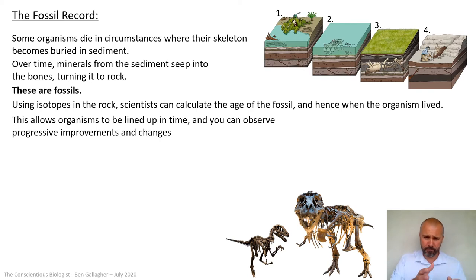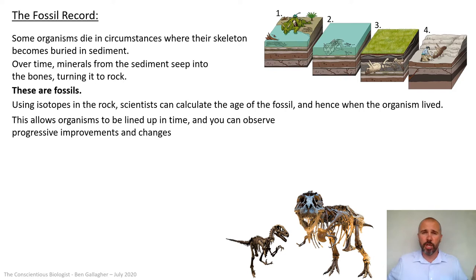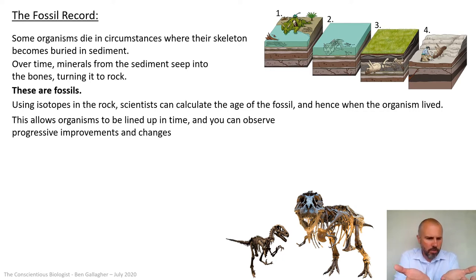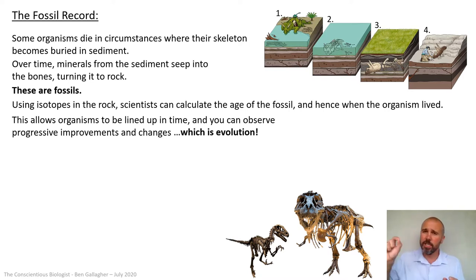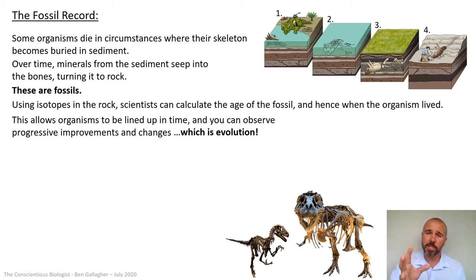If you know the age of fossils, you can take them, date them, and literally line them up in age order. You can observe the progressive improvements and changes — you can have a fossil there, date one next to it, and see small observable differences that would only need to change a little bit to become the next one. You can line them all up. That is evolution — you can see these tiny changes happening over time. Those tiny changes in the fossil record are evolution.